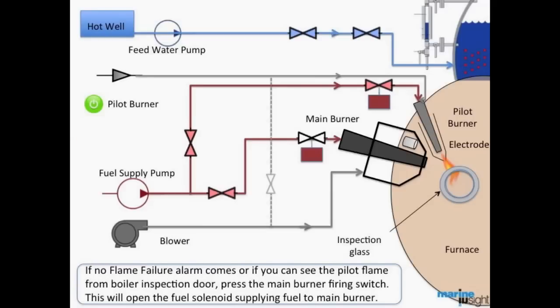If there is no flame failure alarm, you will be able to see the pilot flame from the boiler inspection door. Then press the main burner firing switch. This will open the fuel solenoid supplying fuel to the main burner.